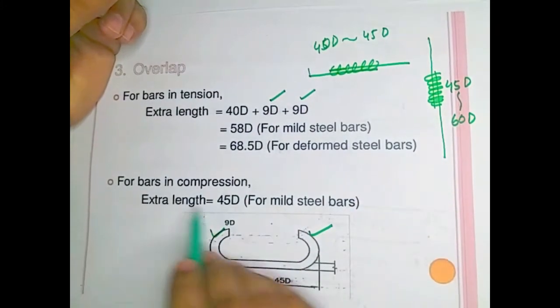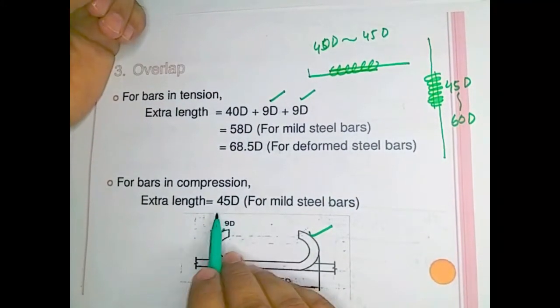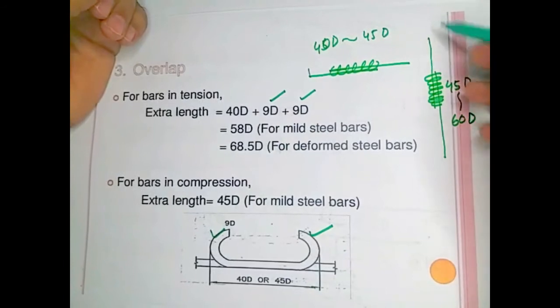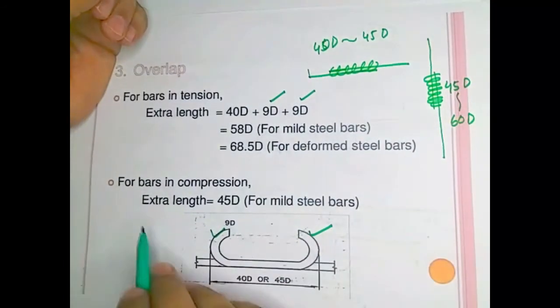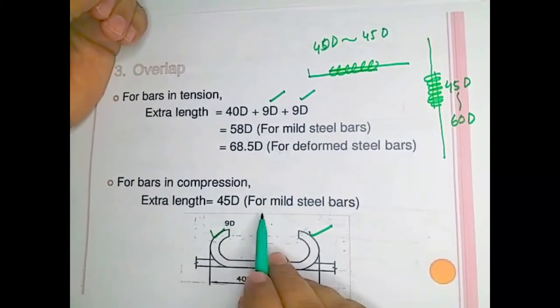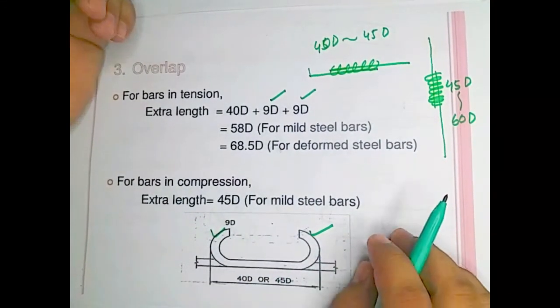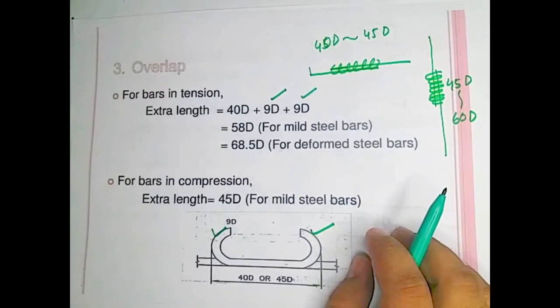For bars in compression, the extra overlapping length for mild steel will be 45 × d.